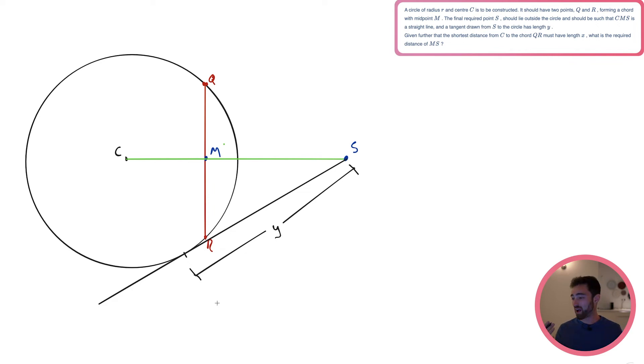So it's getting there. What else have we got now? Given further, the shortest distance from C to the chord QR must have length X. Okay. Shortest distance from the center to the chord. Well, that is always going to be the perpendicular bisector, isn't it? In other words, that is going to be the distance from C to M. So that is going to have length X. X is going to be this distance here. So this chunk of that green line. Okay. And we're now asked for the distance MS. So we are asked for the distance from M all the way to S. Okay. We at least know what we want here.